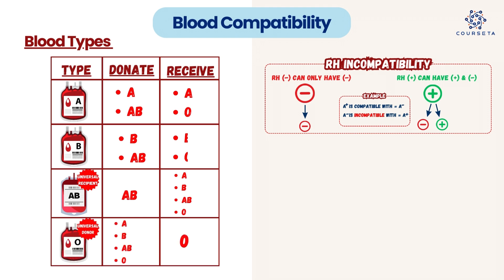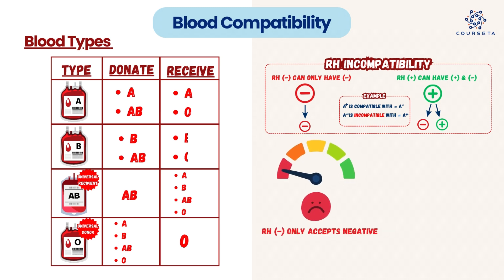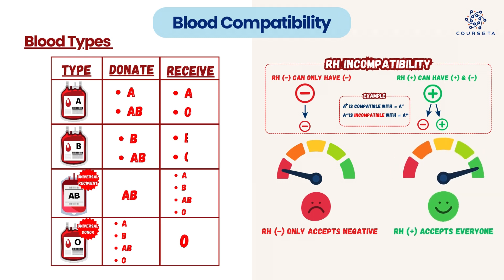Type O is the universal donor — type O can donate to any blood type: A, B, AB, and O. But the downfall is type O is only able to receive blood from another type O. Regarding RH compatibility, RH negative blood can only receive another RH negative. RH positive can have both RH positive and RH negative. Think of it this way: it's positive to have RH positive blood because you can have both types. But with RH negative, you can only have other RH negative blood.